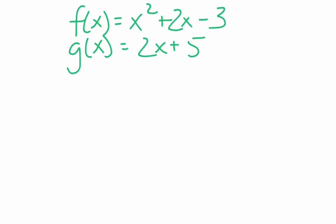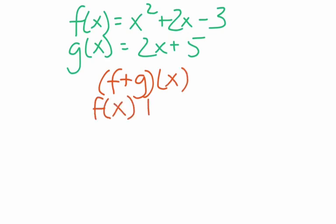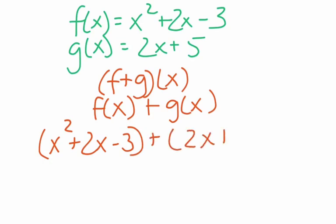So if you were given our two functions — f of x is x squared plus 2x minus 3, and g of x is equal to 2x plus 5 — and you were asked to do f plus g of x, you would simply do f of x plus g of x. Notice there is no x multiplied in there — no x in a parenthesis that carries down. Students who are not paying attention will start to do stuff like that, but if you're copying down the examples and practicing what it looks like in writing, you're a lot less prone to make those mistakes.